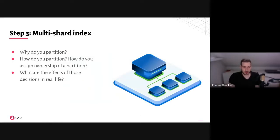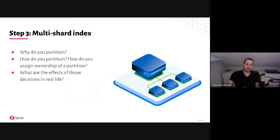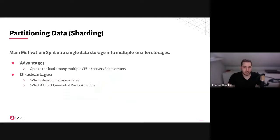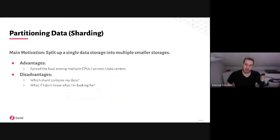That was step two on the roadmap. The next step is sharding, or partitioning. I'm going to explain what that is and start with the motivation for why we'd even want to do this. Once you've decided to do it, there are questions: How do you partition? How do you distribute partitions? How do you assign ownership? And what are the trade-offs? The main motivation is to split data into smaller self-contained units that each contain part of the data — instead of one database, you'd have three smaller ones, for instance.